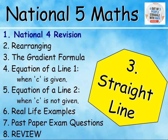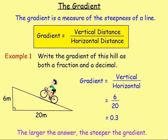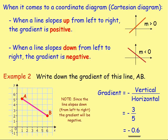The way we started off this chapter was looking at some National 4 revision, mainly with y equals mx plus c. Just remember: m shows us the gradient and c shows us the y-intercept. The gradient is a measure of the steepness of the line. If you work out the vertical distance divided by the horizontal distance, you get a number — that number is known as the gradient.